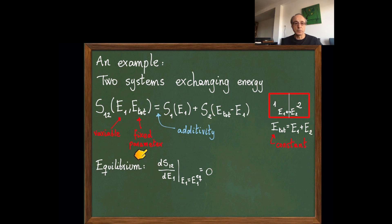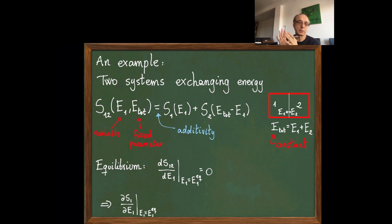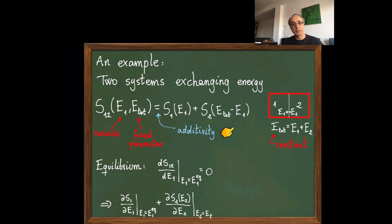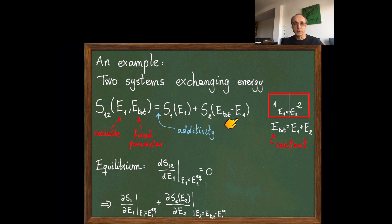Let's use the expression based on additivity and calculate the derivative. The derivative of the sum is the derivative of the first term plus the derivative of the second term. Here E1 is in the argument of S2, so we have to apply the chain rule. We differentiate S2 with respect to its argument E2, and then calculate the derivative of the argument with respect to E1, which is just minus one. So this is the derivative of the total entropy with respect to E1, and this must be equal to zero.